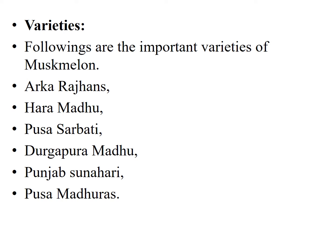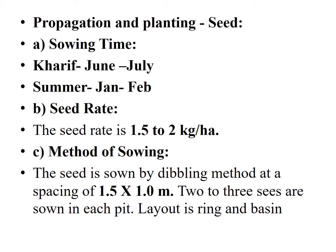Regarding varieties, there are some important varieties: Arka Raj Hans, Haram Madhu, Pusa Sarbati, Durga Pura Madhu, Punjab Sunheri, and Pusa Madhuras. All of these varieties are mainly planted throughout India.